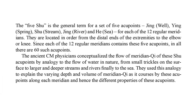The ancient classic explanations conceptualize the flow of meridian chi at these acupoints by analogy to the flow of water in nature, from small trickles on the surface to larger and deeper streams and rivers, and finally to the sea. They use this analogy to explain the varying depth and volume of meridian chi as it courses by these acupoints along its meridian, and hence the different properties of these acupoints.